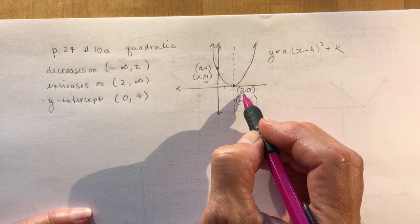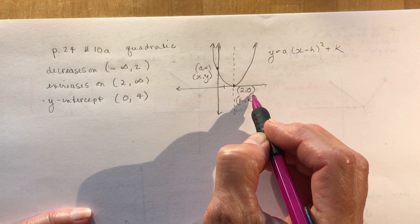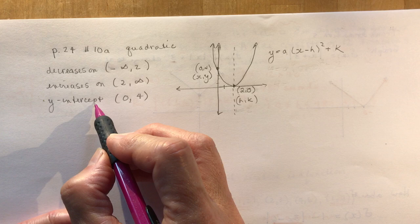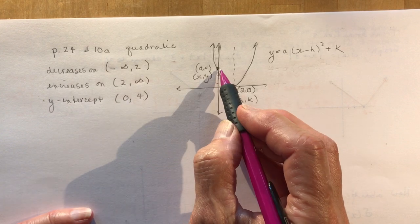For simplicity, I put the vertex at 2 and 0. Now on the y-axis, we have the y-intercept of 4, so 0, 4.